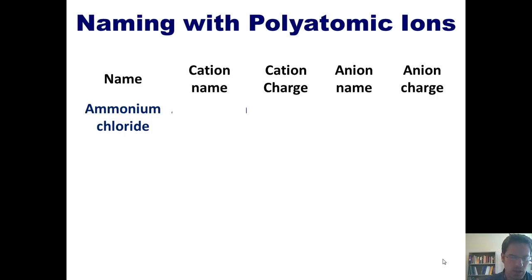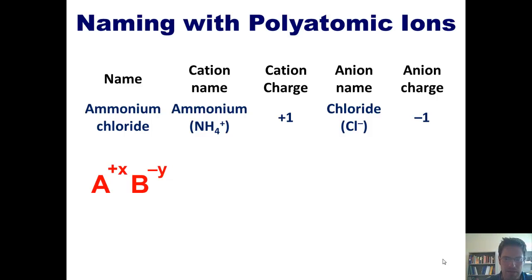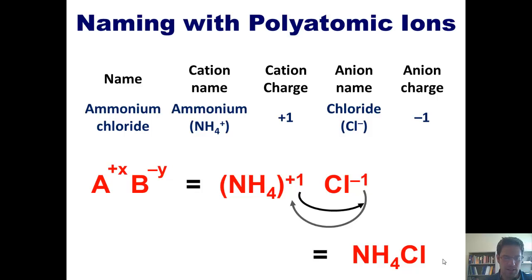What is the cation's individual name? It's ammonium. And what is its charge? Plus one. What is the anion's individual name? It's chloride. And what is its individual charge? It's negative one. We now return to this old format of A that has a plus x charge, combining with B that has a minus y charge. In this case, my A is NH4, my X is plus one, and my B is Cl, and my minus Y is minus one. Note how I put parentheses around my NH4 here just so that I don't get the four confused with the plus one. Doing the same transposition of charges, turning them into subscripts like we've done in the past, I can see that my final answer is going to be NH4Cl, ammonium chloride.